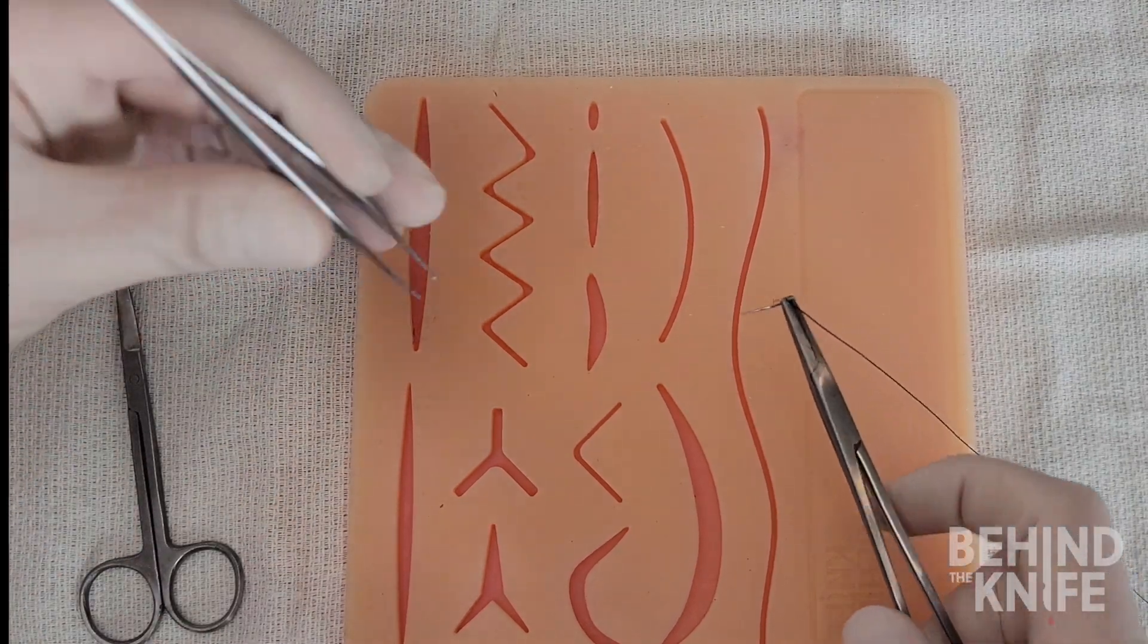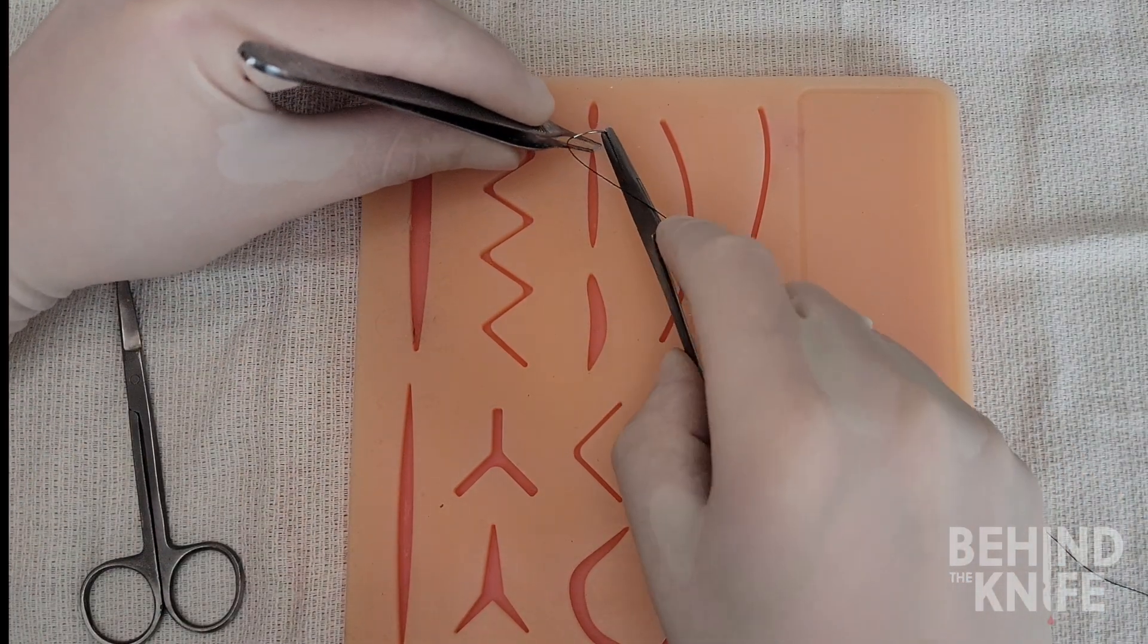We're going to start by picking up our needle drivers and loading our needle into them in an orientation for a forehand throw.